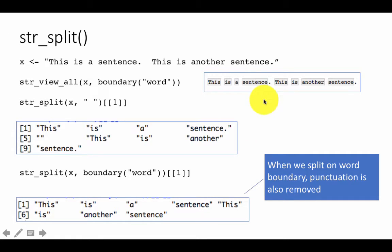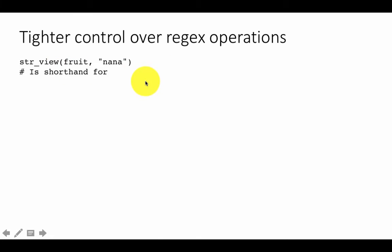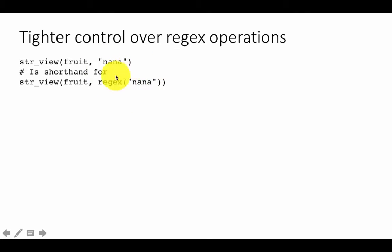Just a few finishing touches and we are all done with regular expressions. Till now we have been using regular expressions as a plain string, and that has worked well for us. But sometimes you may want to do a regular expression match and say, for example, don't consider case as significant — ignore case. So if you do str_view fruit, 'nana', that is really a shorthand for str_view fruit, regex('nana'). It is just a short form — instead of saying it is a regex of NANA, we are allowed to say the string and the function treats it as a regular expression.